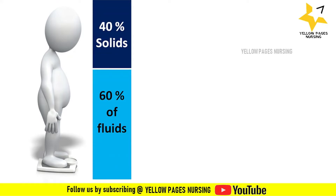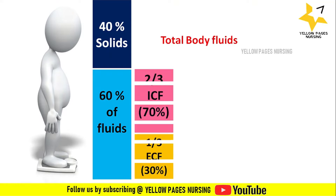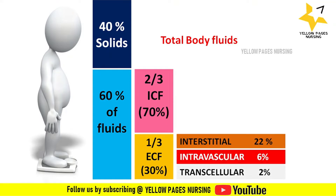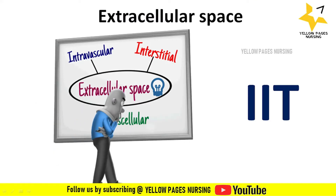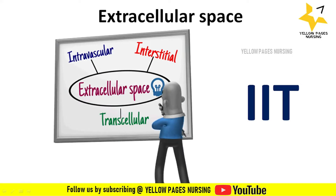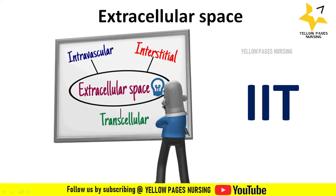The adult body weight comprises 40% solids and 60% fluids. This 60% is distributed as two-thirds intracellular fluid (70%) and one-third extracellular fluid (30%). The 30% extracellular fluid is further distributed as 22% interstitial fluid, 6% intravascular fluid, and 2% transcellular fluid. For easy remembrance, use the mnemonic IIT: intravascular, interstitial, and transcellular fluid.